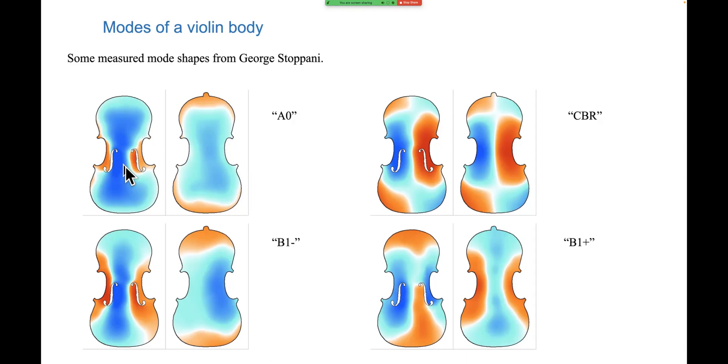This next mode, if you think about folding that like a book around this line, you'll see that the top is in orange in the same place that the back is in blue. Everywhere throughout this pattern, the top and the back have got opposite colors, so essentially the back and the top are always moving together. This is really like a vibration pattern of a thick flat plate, but there is no volume change to speak of. The top and the back are always canceling each other out, so this is not a good sound radiator.